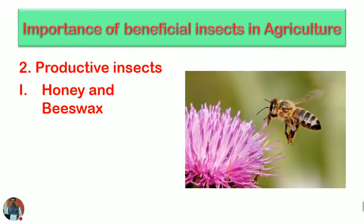Regarding productive insects and their importance in agriculture — honey and beeswax are obtained from honey bees. These social insects gather nectar and pollen, prepare a colony, and produce other products. Byproducts of honey bees are utilized as commercial products, running a big economy. Along with that, pollination services are rendered and generate income for people who lend their beehives or bee boxes for pollination in farmers' orchards.